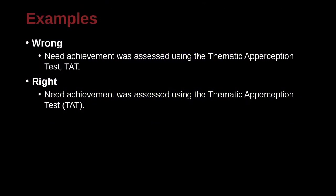Need achievement was assessed using the Thematic Apperception Test. So this is some kind of special test name, and it's often called TAT. So how do you do that? The first time you put it inside of parentheses, and then later you would just write TAT without the parentheses. But the first time you need to write the whole word, and then write the abbreviation.